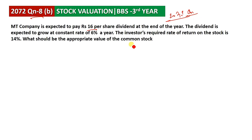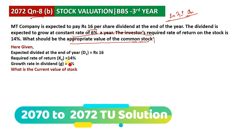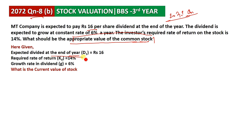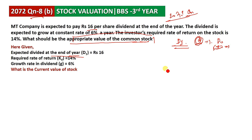What is the appropriate value of the common stock? The expected dividend at the end of the year will be given, which means it is future tense — use D1. The required rate of return is given for the investor, and the growth rate is 6%. What is the current value of the stock?